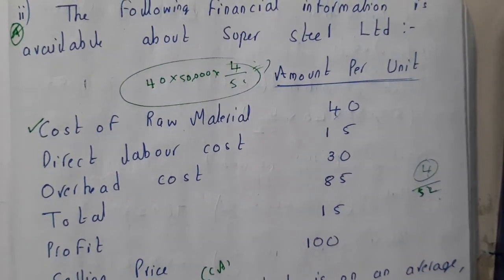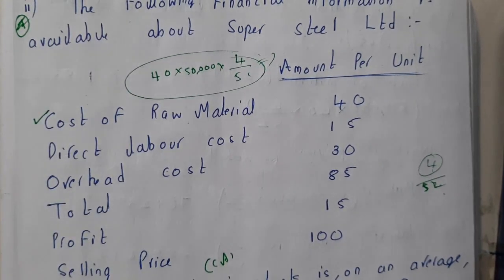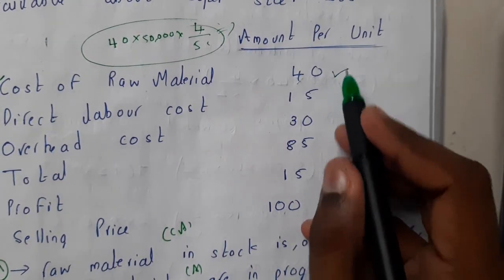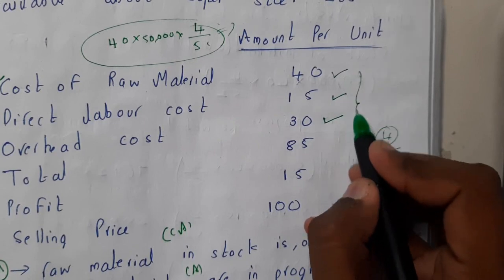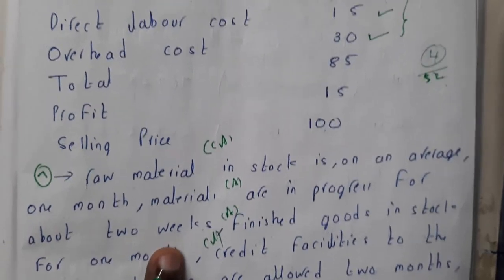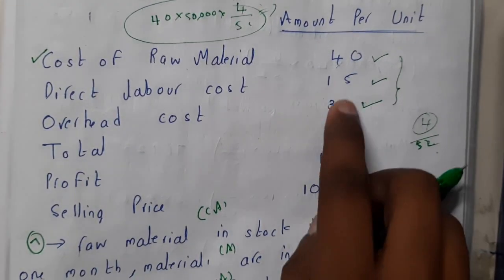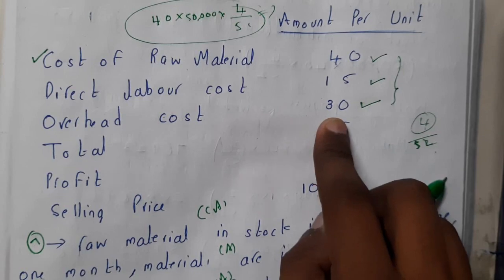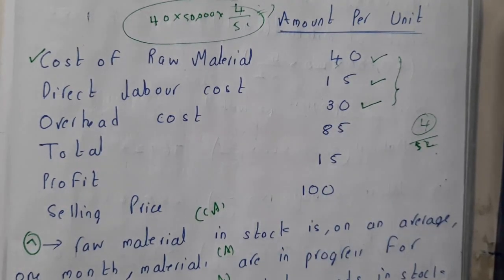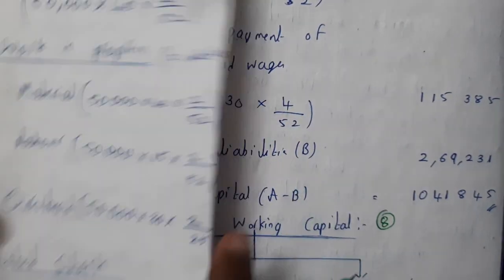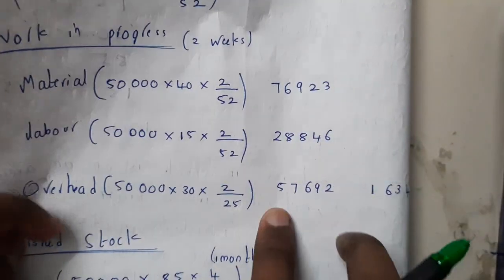Now let us go through work in progress. For WIP, you include raw material, labor, and overhead costs. The time is 2 weeks, so 2 by 52. Calculation: (40 into 2/52 into 50,000) plus (15 into 2/52 into 50,000) plus (30 into 2/52 into 50,000). After totaling material, labor, and overhead components, we get WIP value of 1,63,461 rupees.